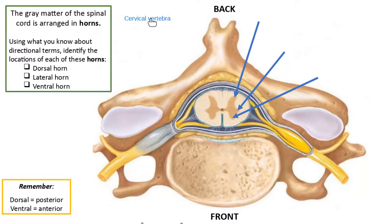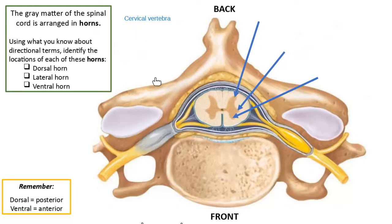We learned about the vertebrae as the bones that make up the spine. The word cervical describes the neck — this is a cervical vertebra, meaning it's found in the neck region. When talking about the vertebrae in the spine, the cervical vertebrae are the eight top vertebrae at the very top.